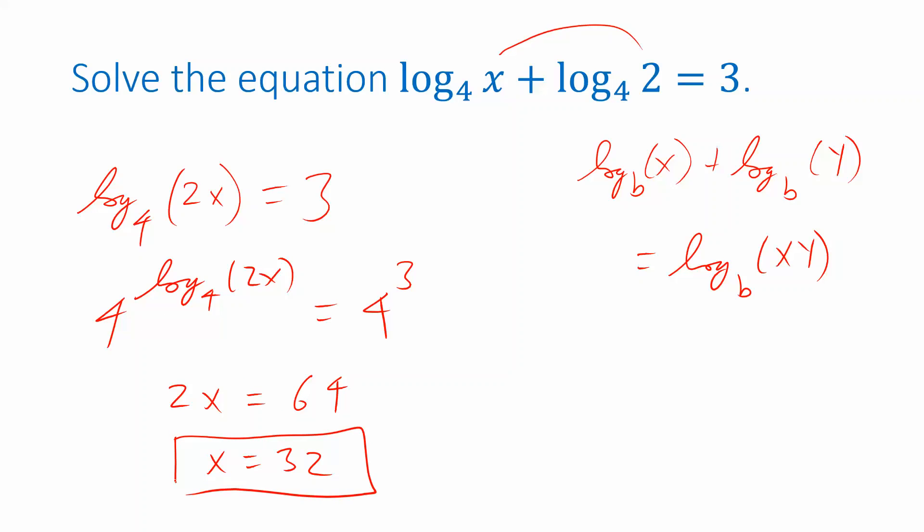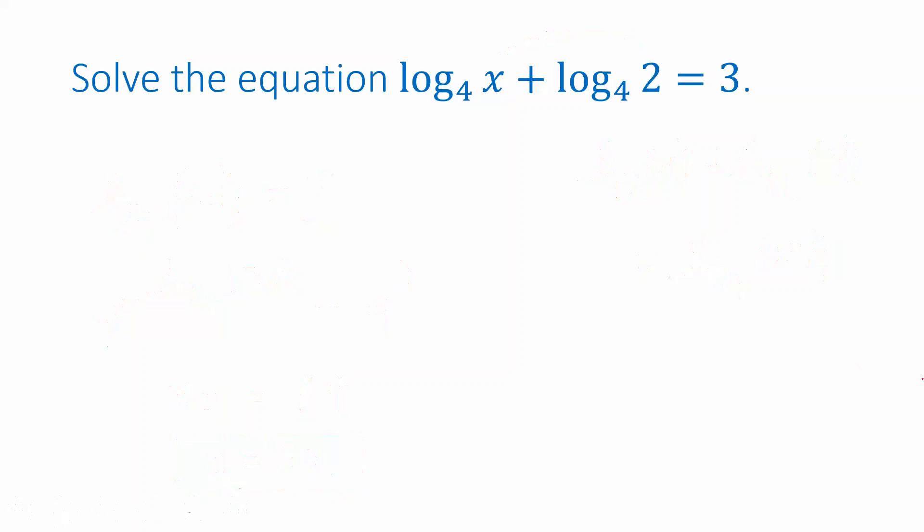Now what if you had tried to approach this a different way? What if you exponentiated right at the very beginning? Well, let's try that. Let's take each side and make it the exponent in the exponential function 4 to the x. This whole thing is equal to 3. So that should be 4 to the 3.